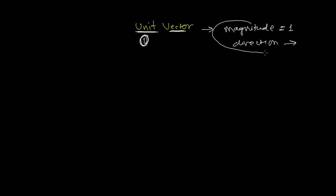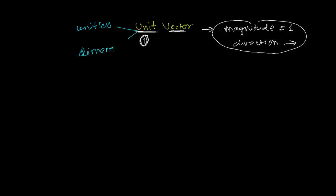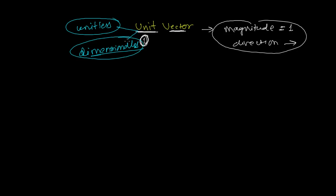So unit vectors have magnitude equal to one and they have a direction. Two important things to remember: unit vectors are first unitless — they do not have units like meter, centimeter, kilometer, or newton. And because they have no unit, they are also dimensionless.